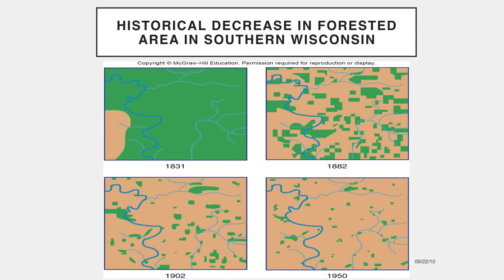This series of maps shows the level of habitat destruction associated with the conversion of forests to agricultural and residential land uses. Here we see the decrease in wooded areas of Cadiz Township in southern Wisconsin during European settlement. The green areas represent the amount of land in forests each year. As you can see, over a 120-year period, the entire forest ecosystem has been converted, resulting in habitat loss for thousands of species.